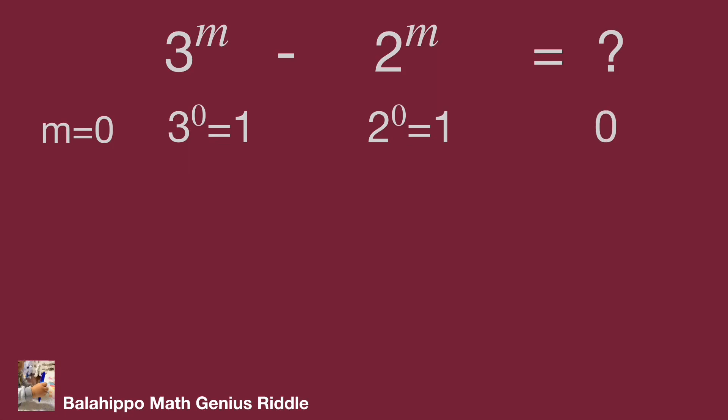Then check if m is negative integers. While m is minus 1, we get 3 power of minus 1 equals 1 over 3. 1 over 3 minus 1 over 2 is not an integer.